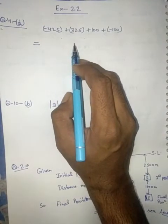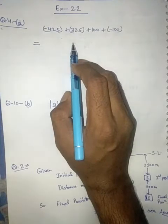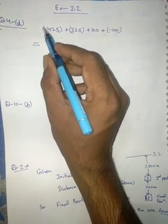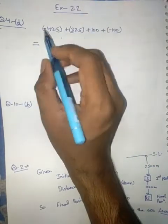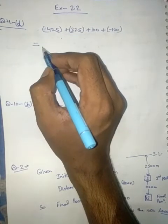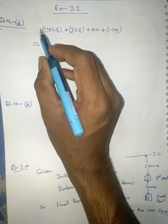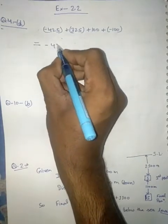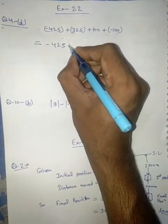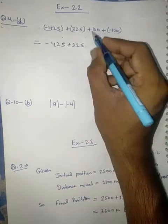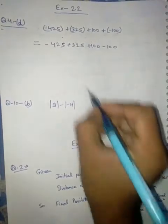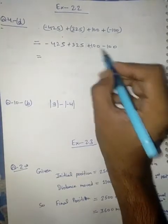You have to solve it and learn it. First, we will open the bracket. The sign which is hidden outside the bracket is plus. So plus into minus — opening the bracket — becomes minus 425. Then plus into plus gives plus 325.